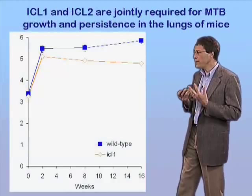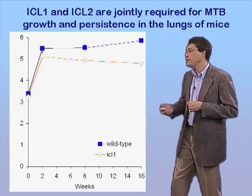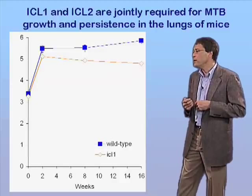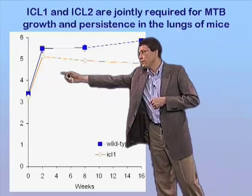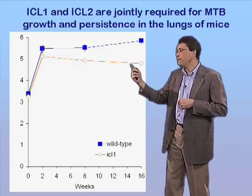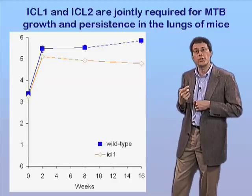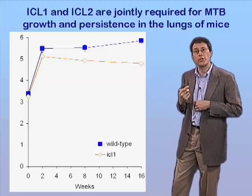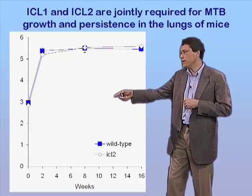When we took the ICL1 mutant strain and put it into the lungs of mice, monitoring growth and persistence, we found — plotting log base 10 colony-forming units versus weeks post-infection — that the ICL1-deficient mutant actually grew quite well during the acute phase of infection, the first couple of weeks, but was somewhat defective for persistence during the chronic phase after bacterial numbers had stabilized under pressure from the host immune response. That's quite a significant attenuation specifically during the chronic phase. In contrast, when we knocked out ICL2 alone, the mutant bacteria showed no defect whatsoever for either acute phase growth or chronic phase persistence in the lungs of mice.